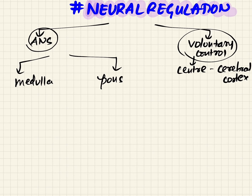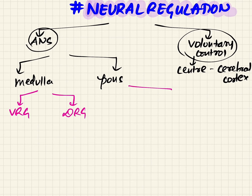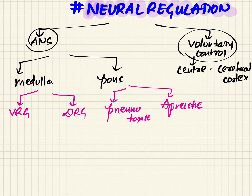Inside the medulla, the respiratory centers are called medullary respiratory centers, namely VRG and DRG. DRG is the dorsal respiratory group and VRG is the ventral respiratory group. In the pons, there are two respiratory groups: the pneumotaxic center and the apneustic center.